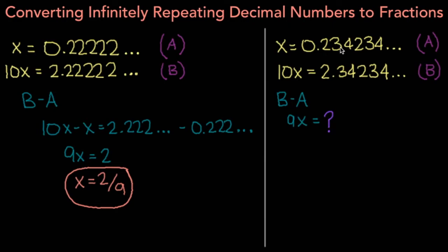Notice that the recurring group of numbers after the decimal point is of length 3. So if we multiply equation a by 1,000 on both sides, on the left hand side we have 1,000x, and on the right hand side, the decimal place moves 3 spaces to the right, and we have 234.234234, where this pattern continues on forever. Let's call this equation c.